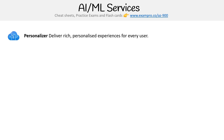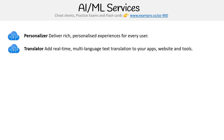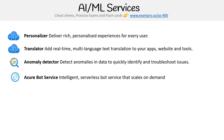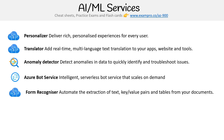The first one is Personalizer — it delivers rich, personalized experiences for every user using AI. Then you have Translator, which adds real-time multi-language text translation to your apps, websites and tools. You have Anomaly Detector, which detects anomalies in data to quickly identify and troubleshoot issues. Then Azure Bot Service — an intelligent serverless bot service that scales on demand.